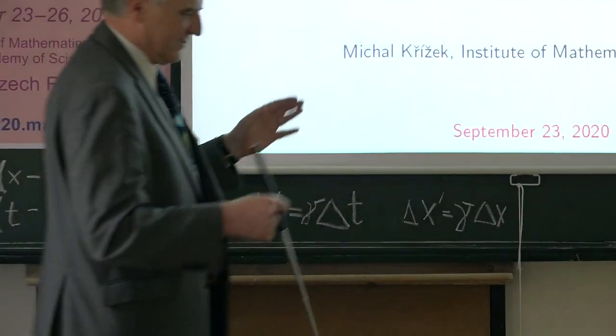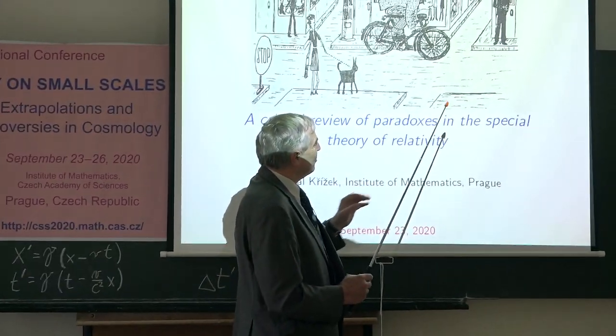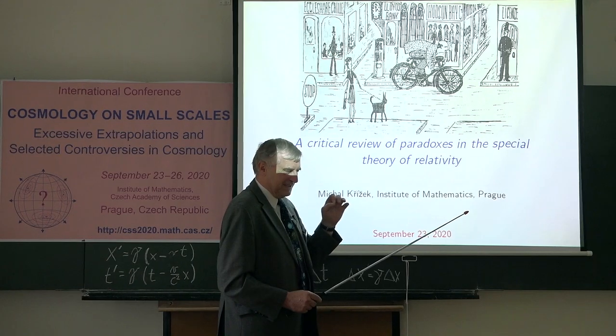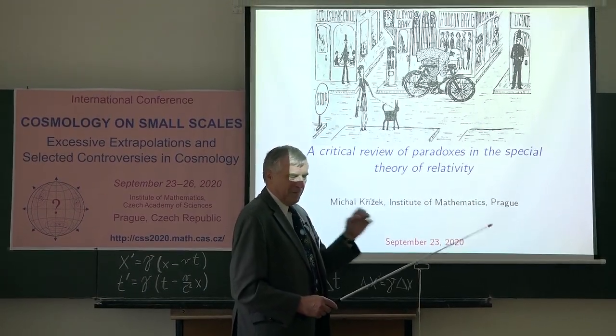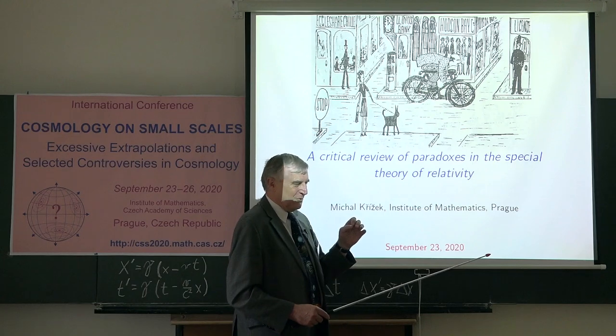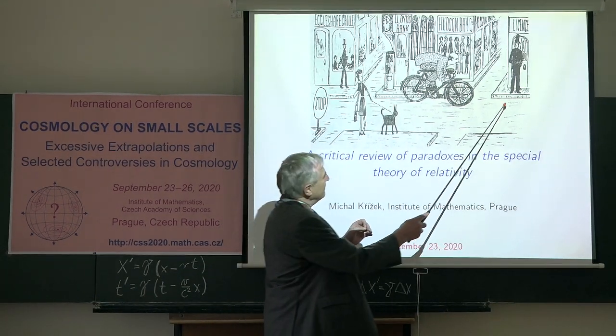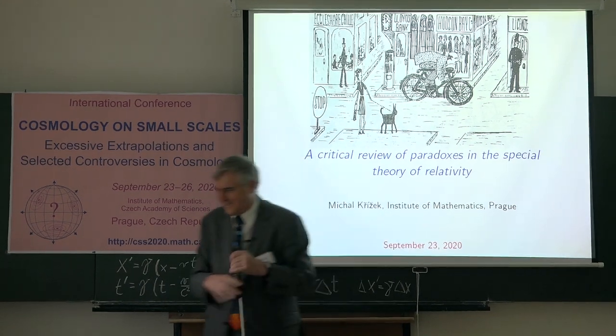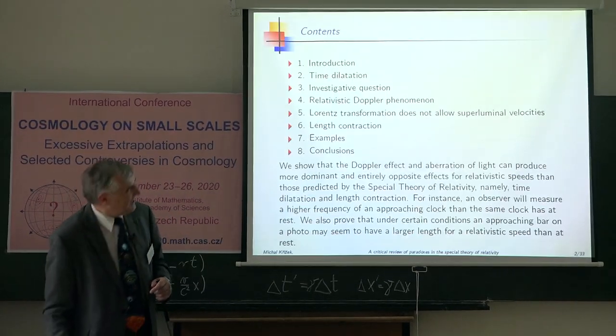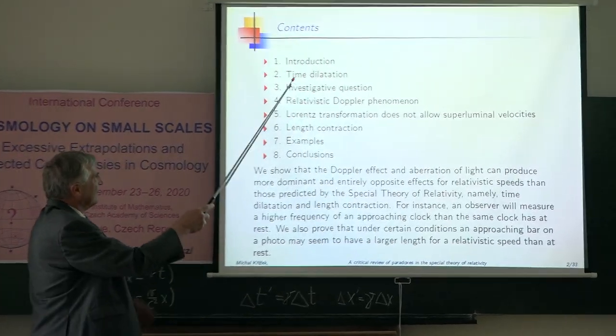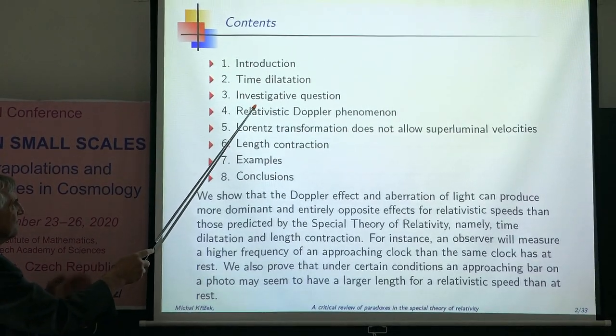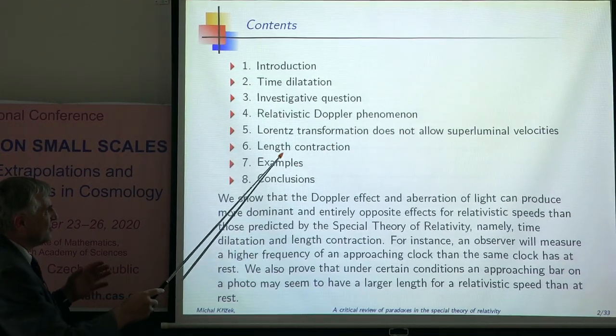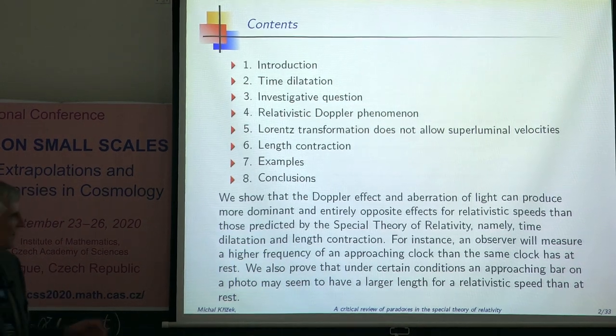which represents contractions of length. But I would like to show you that if you take into account finite speed of light, which leads to Doppler phenomenon and aberration effects, then this policeman will be not thin but much fatter. This is the contents of my lecture. I will speak about time dilation, investigative questions about relativistic Doppler phenomenon, Lorentz transformation, length contraction, and examples.